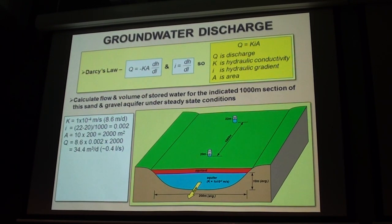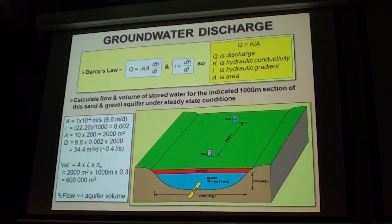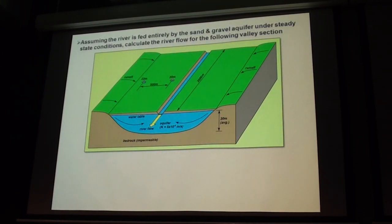To calculate the volume of water stored, all we need is the porosity. Using about 30% for a nice sand-grade aquifer — about 30% open space containing water. It's simply area × length × effective porosity = 600,000 cubic metres stored in any 1,000 metre section of the aquifer. So you can see the flow is much less than the aquifer volume — 600,000 cubic metres stored, only 34 cubic metres per day flowing through any particular 2D area. This information gives you a really good idea of whether it's a good aquifer to utilise and how much you can pump before doing damage.